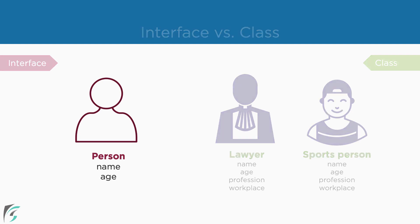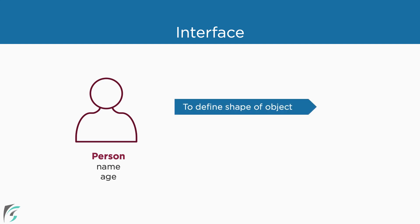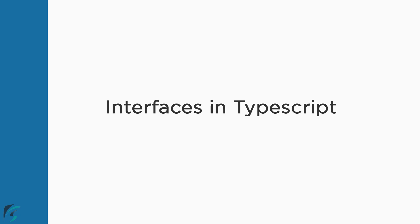Hence, we use interface when we want to define the shape of the object with no details. We can use this shape in different parts of our application in different ways. If we need to define a list of properties which we can use to define a particular type of object, then we use interface. Let us now dive deeper into interfaces in TypeScript and use it in our demo.